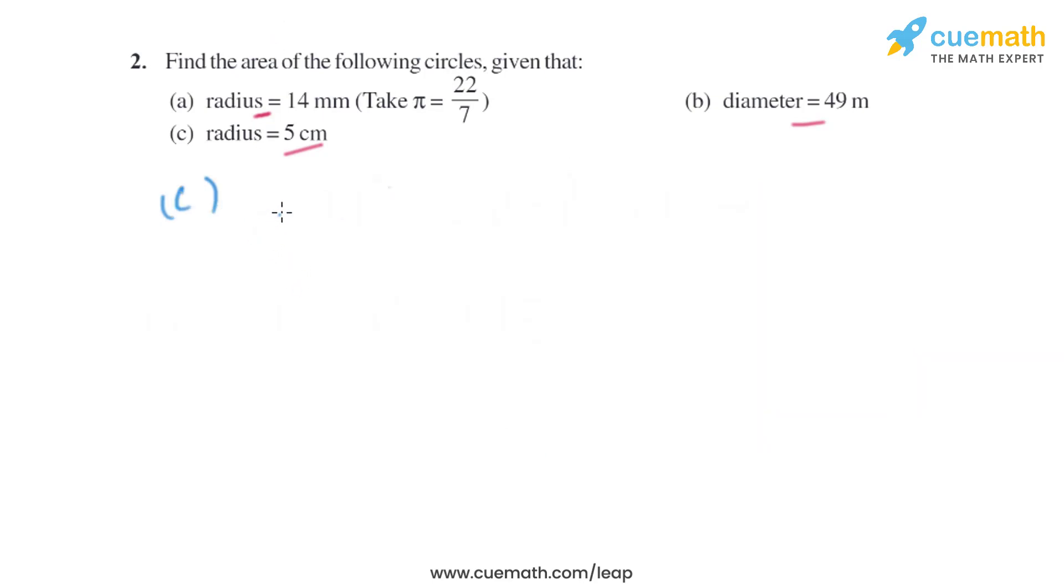Now let's move on to part c. The radius is given as 5 centimeters and we know the formula to find the area of the circle is πr². So π is 22/7 and radius is 5, so it will be 5². So it will be 22/7 multiplied by 25, which is same as 550 divided by 7 square centimeters. So that will be the area of the circle with radius 5 centimeters.